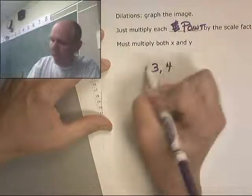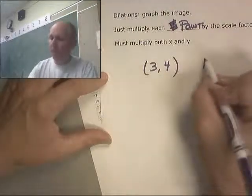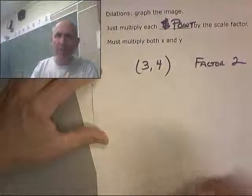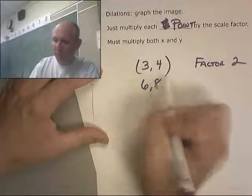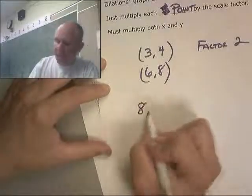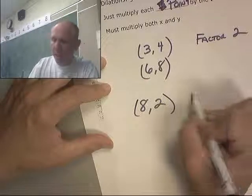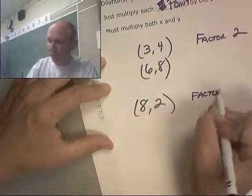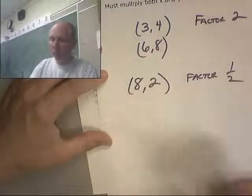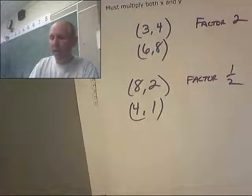So if I have a 3,4 and I want to scale that up by a factor of 2, it just becomes 6,8. There you go. Now, if I had something maybe an 8,2 and I want a factor of 1 half, I just multiply each number by a half. Half of 8 is 4, half of 2 is 1. There we go.